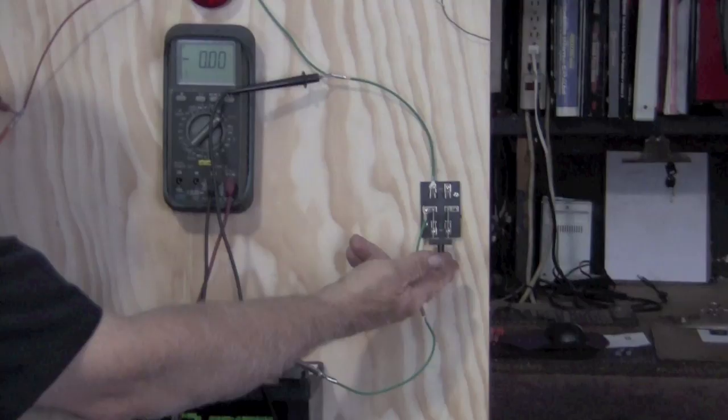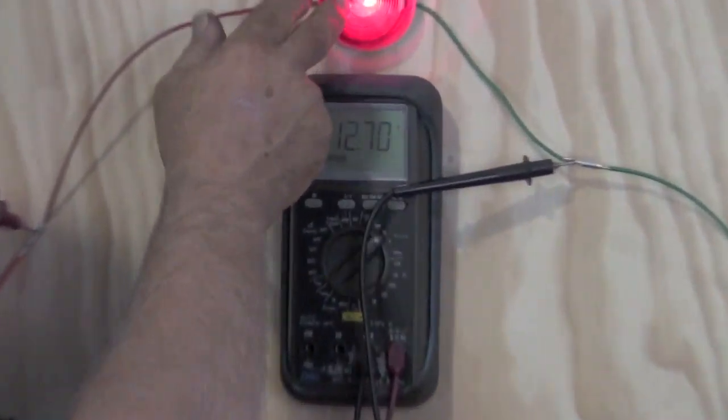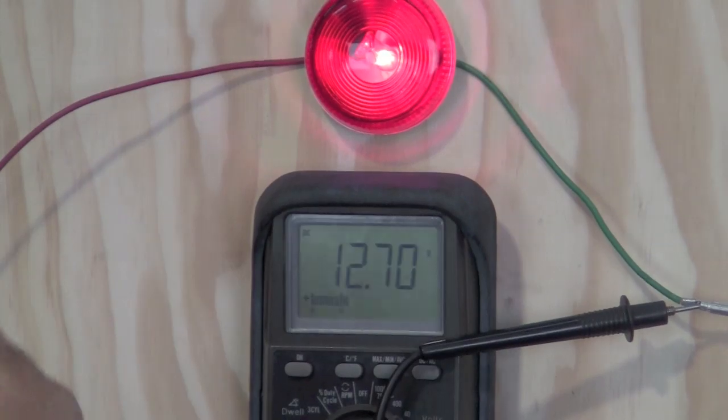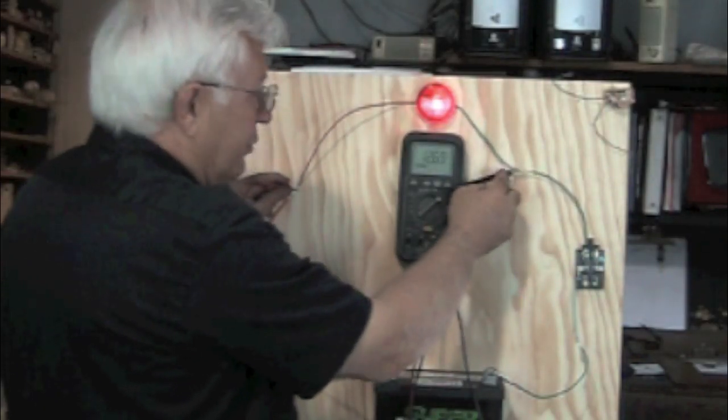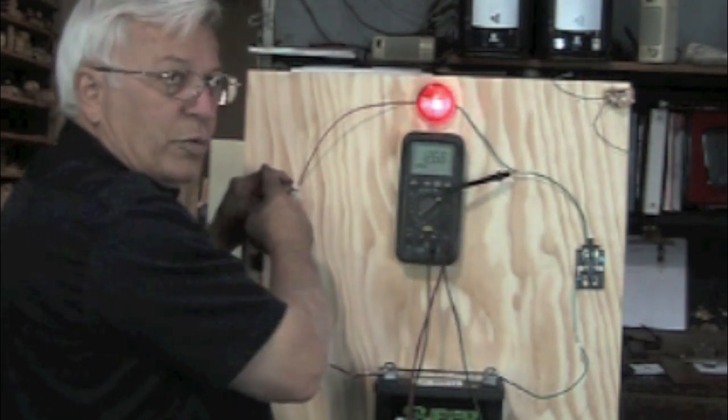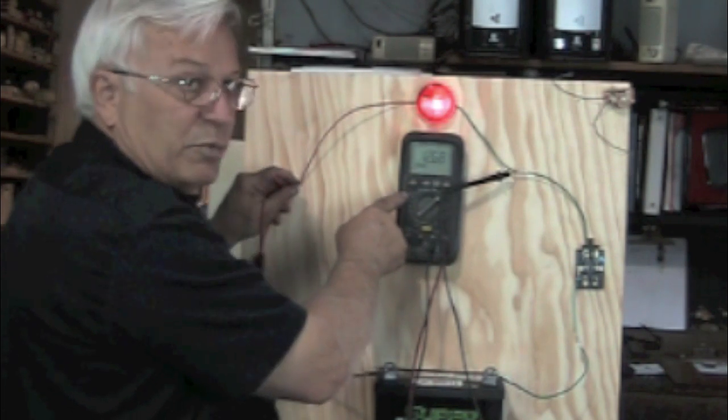But when I put the ground back into play, the load is on, I'm reading 12.7 volts. What does that mean? I have full potential between this point and that point. Full pressure between these two points. That's what the DVOM reads.